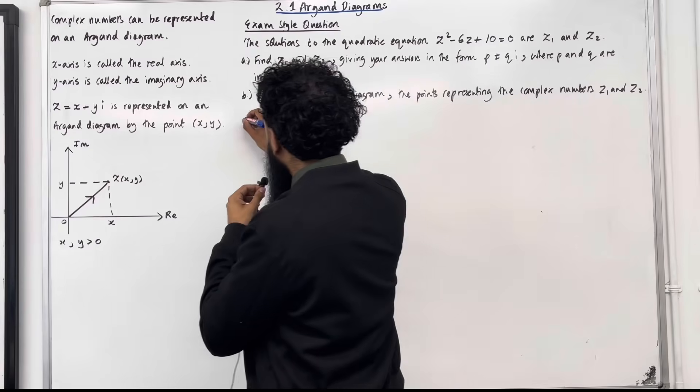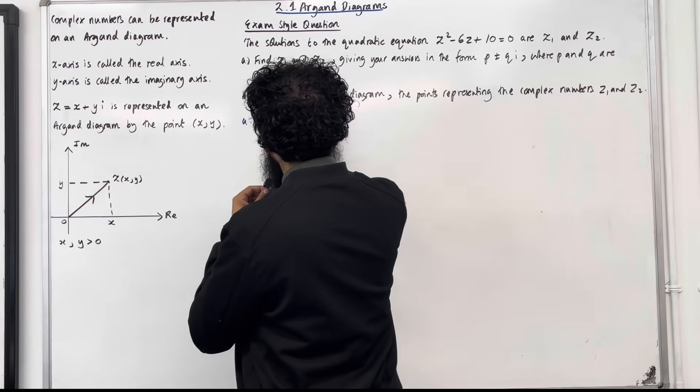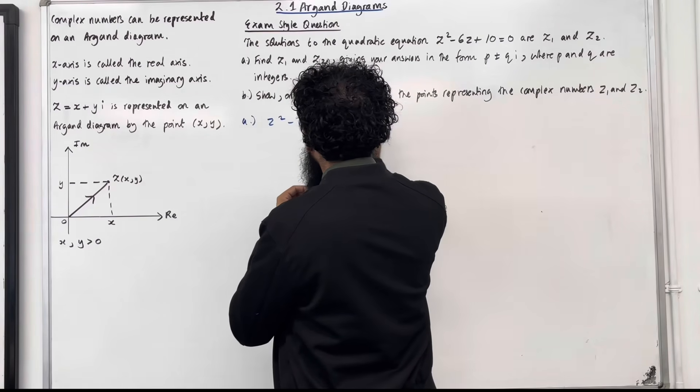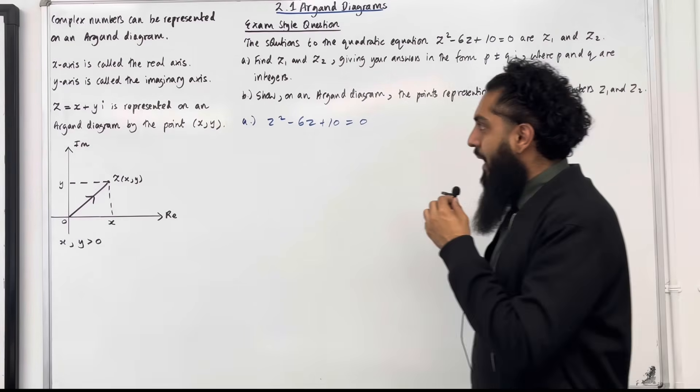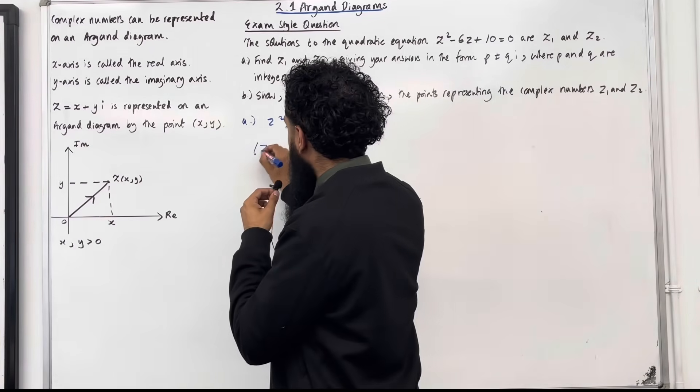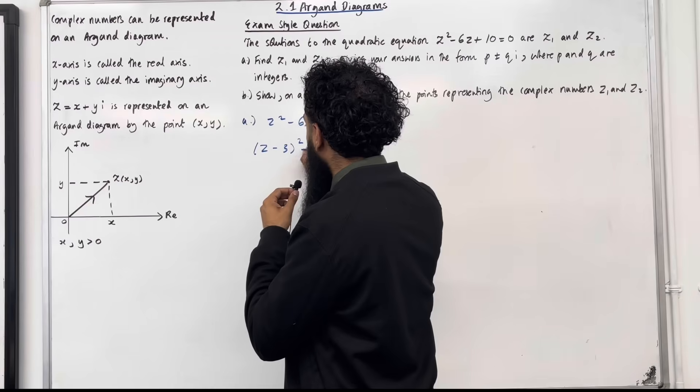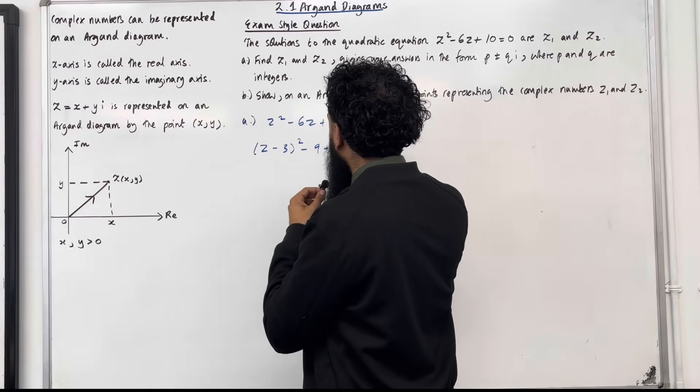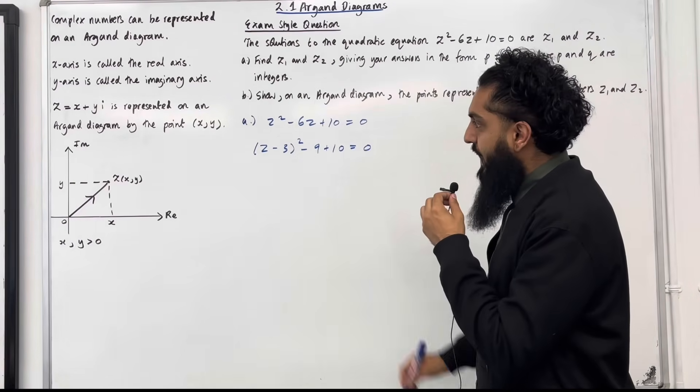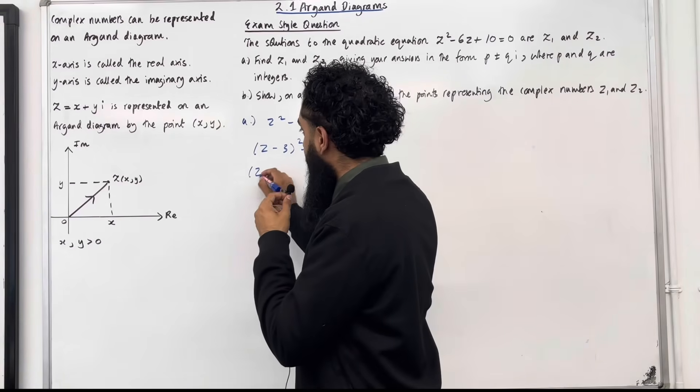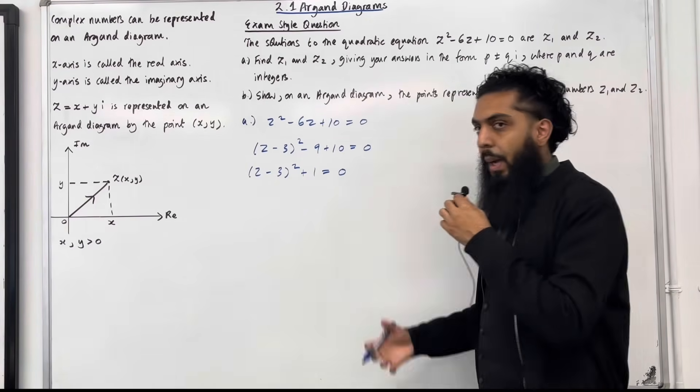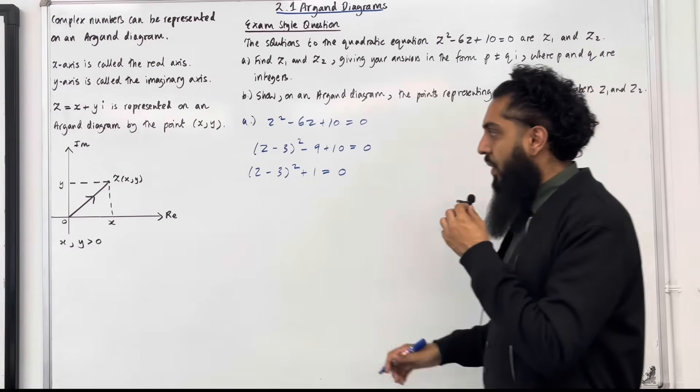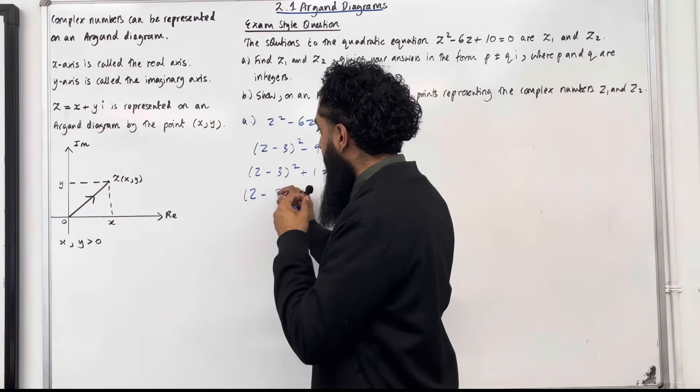In part A we have the quadratic equation z² - 6z + 10 = 0. I'm going to solve this by completing the square. If I complete the square I get (z - 3)² - 9 + 10 = 0. This simplifies to (z - 3)² + 1 = 0.